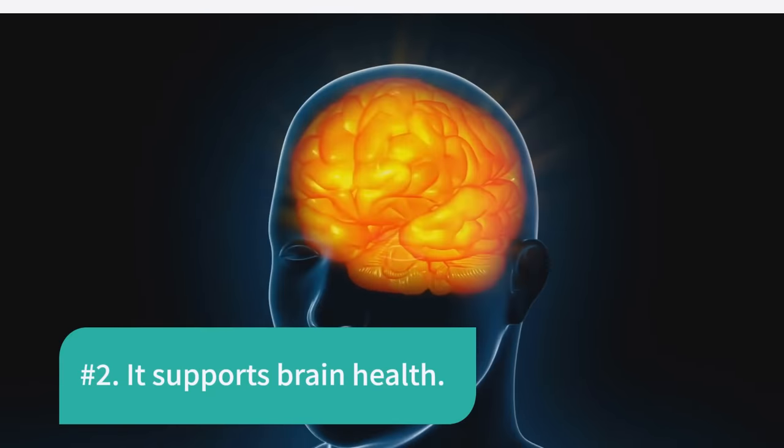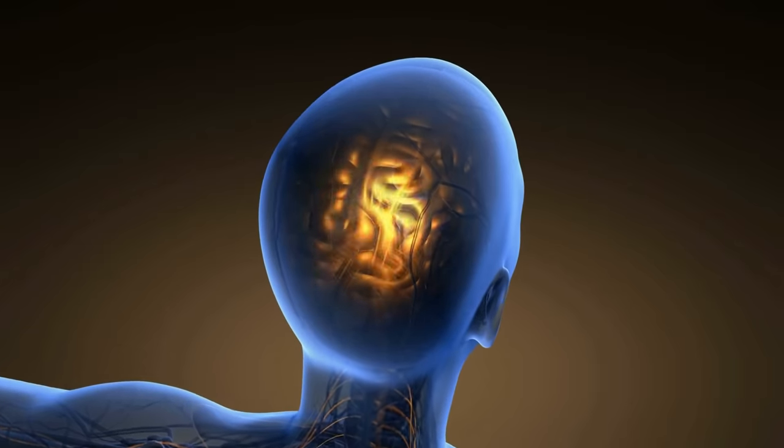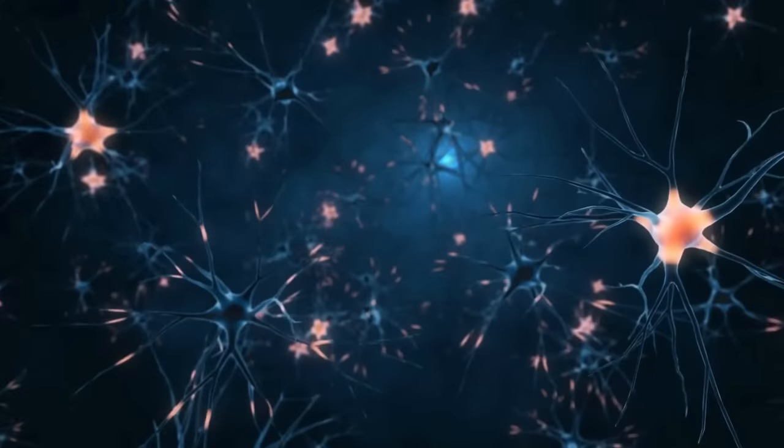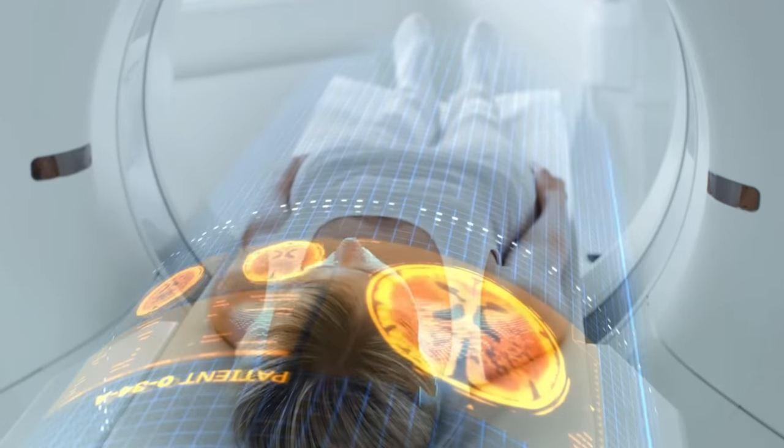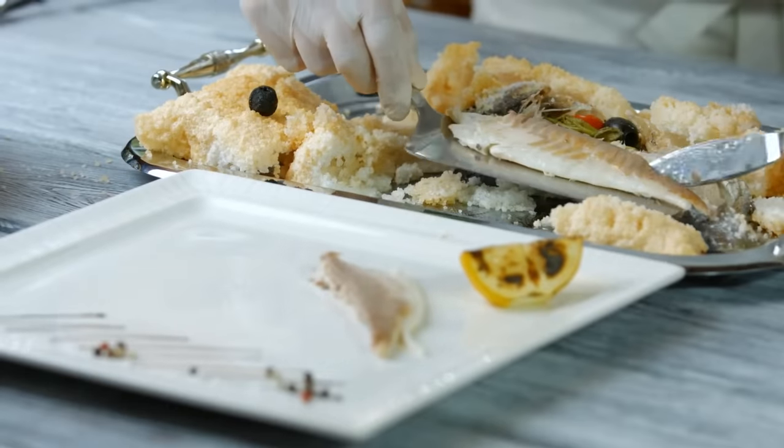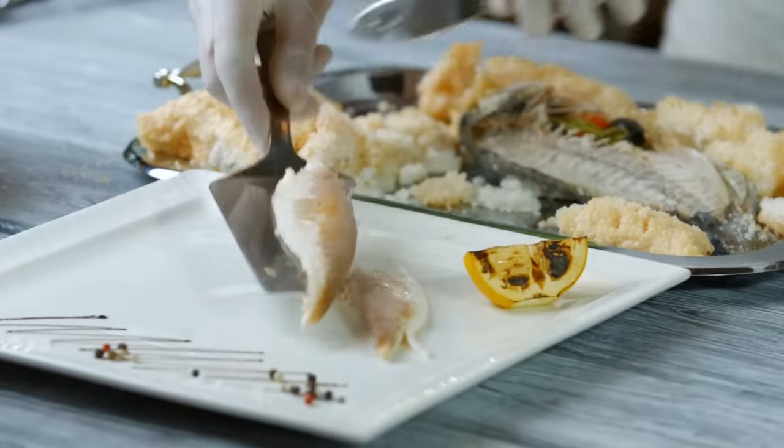Number two: it supports brain health. The brain is composed of 60% fat and needs omega-3s to properly develop and function. Now, humans lack the enzymes needed to create omega-3s. As such, the only way we can get them to optimize our brain health is through our diet.